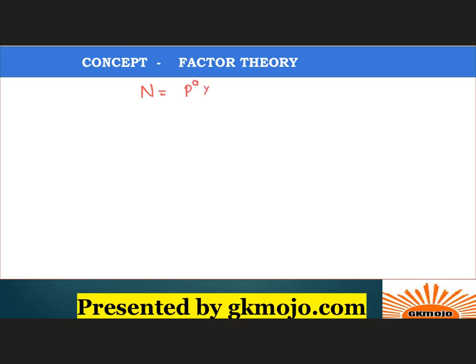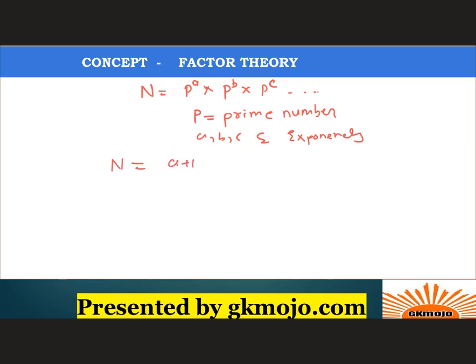Any number N can be written in the form of P1^a × P2^b × P3^c and so on, where P is a prime number and A, B, C are natural number exponents. So the total number of factors for N will be (A+1)(B+1)(C+1).